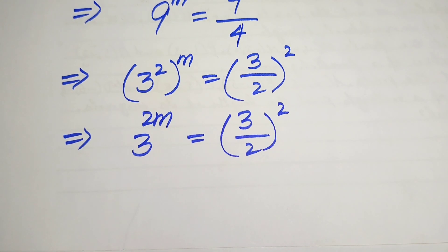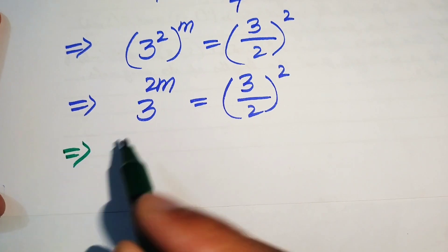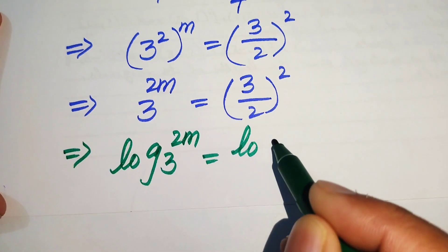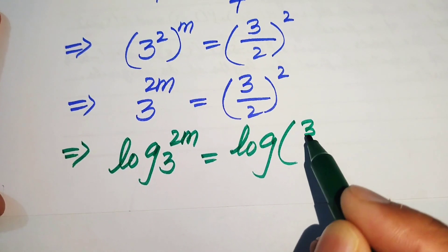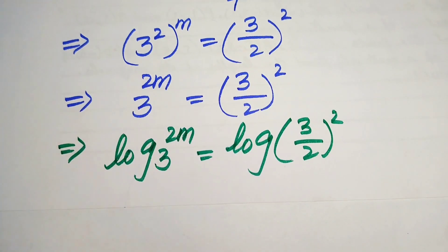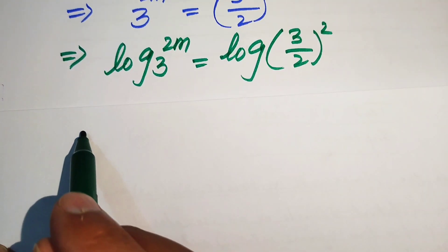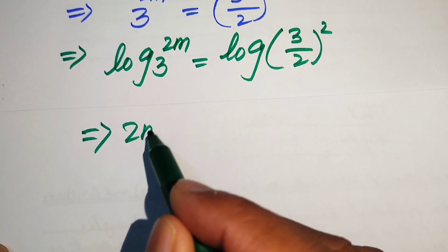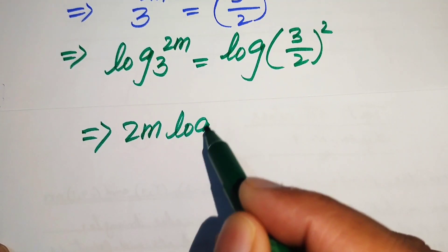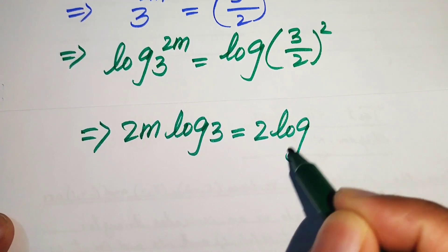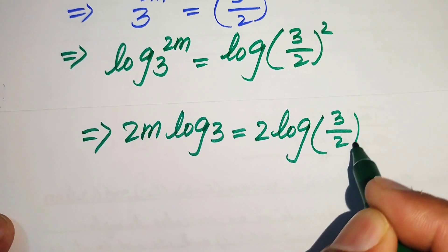To find the value of m we take the log on both sides of this equation. When we take the log on both sides it is written as log of 3 to the power of 2m equals log of 3 over 2, whole squared. Using the power property of log, we move the exponent 2m to the front: 2m times log 3 equals 2 times log of 3 over 2.